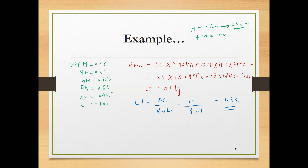We can further improve by looking at the asymmetry multiplier, since the angle of asymmetry was 45 degrees. If we can reduce this angle, AM increases, which increases RWL and further decreases the lifting index, making the task even safer. In the next segment we will solve a couple of examples using the NIOSH lifting equation. Thank you.